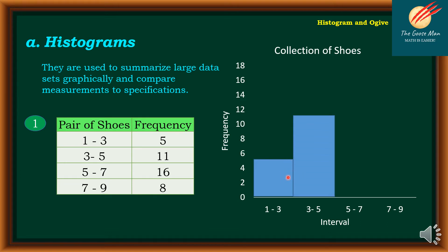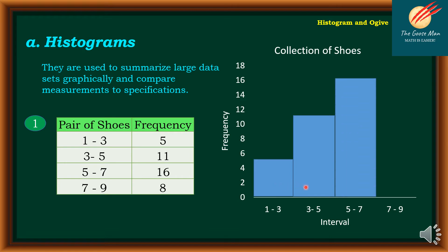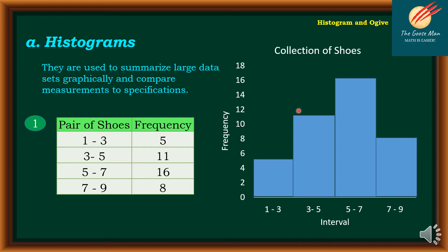Notice that there is no space between the bars — for example, between 1 to 3 and 3 to 5. Next, for 5 to 7, I have 16, and finally 7 to 9, I have 8. Looking at our histogram, the range 5 to 7 has the highest frequency of 16. After that, 3 to 5 is the second highest with 11, followed by 7 to 9 with 8. The range 1 to 3 has the lowest frequency of 5.